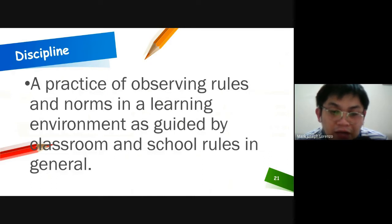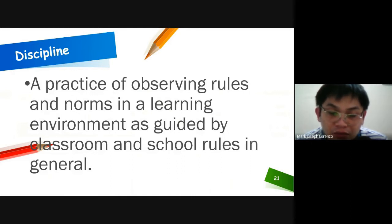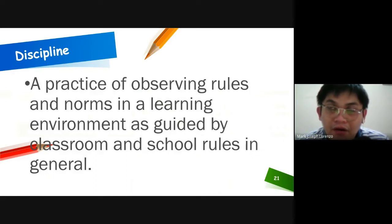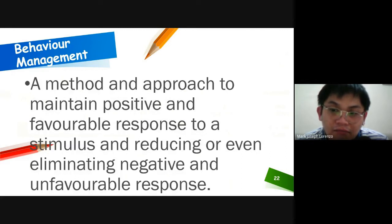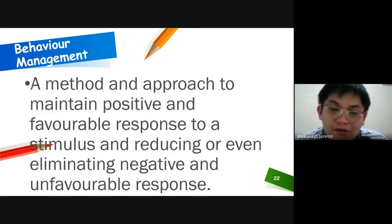As we notice, before we start a class, a school year, or a term, we read the classroom policies and even the school rules. When a learner observes properly or appropriately those existing rules, then they are at the discipline level. And when erring behavior occurs, there is a corresponding level, which is where behavior management comes in — if one tries to maintain a learner's positive behavior and eliminate negative behavior.